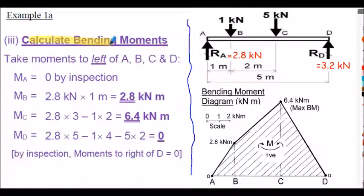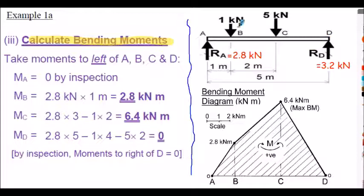Now we calculate bending moments. What we do is take moments to the left or right of a particular point. For consistency, I'm going to take moments to the left every time initially. At point A, looking to the left there's nothing there, so the bending moment at A equals zero by inspection. Moments are forces multiplied by their perpendicular distance from the point of rotation.